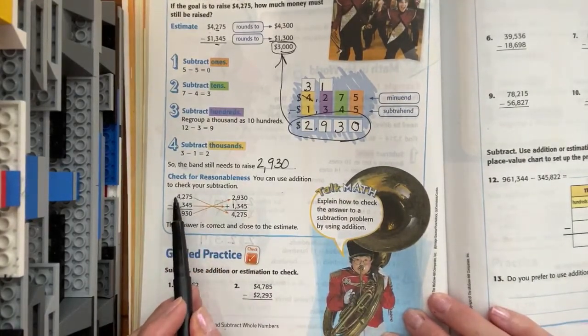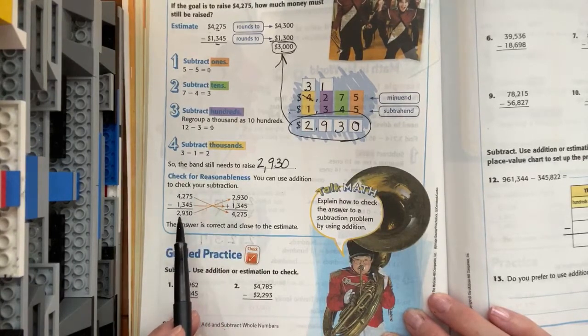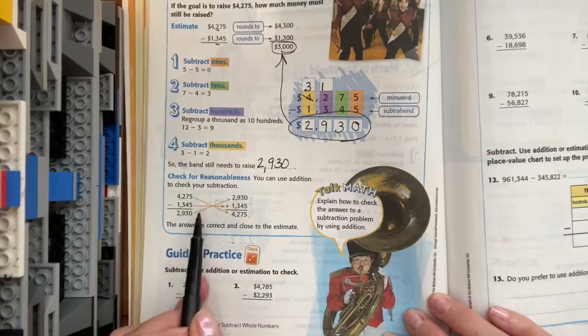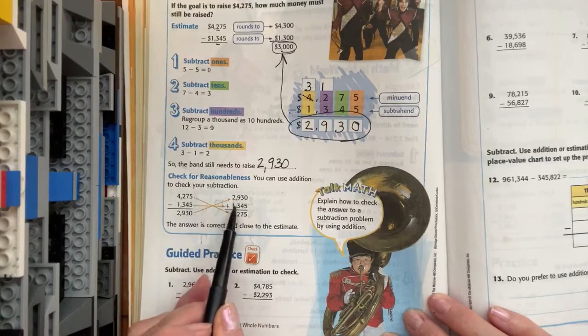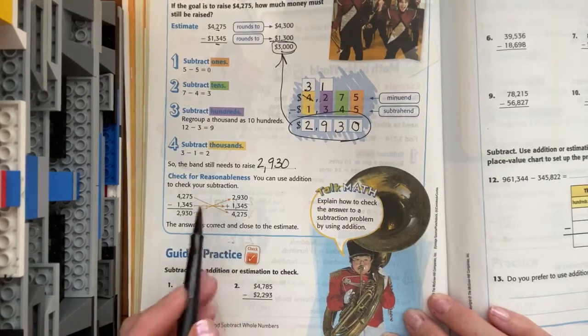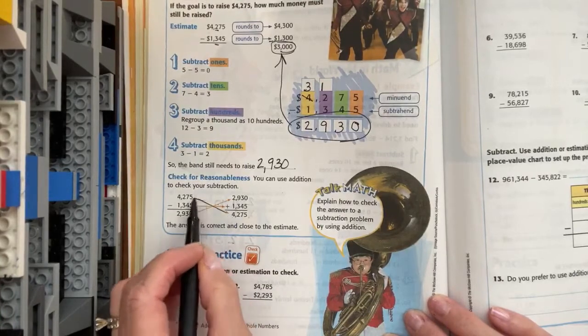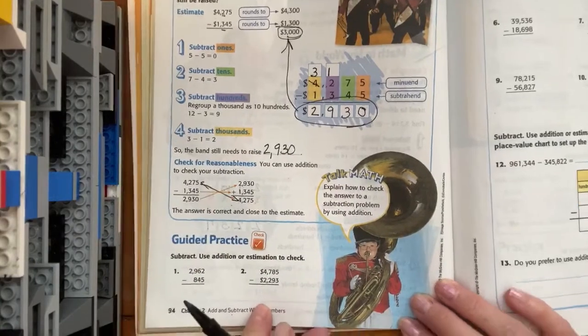So here, that's what they're showing you. They had four thousand two hundred and seventy five. They subtracted. We got two thousand nine hundred and thirty. So then they rewrote it as an addition problem. Two thousand nine hundred and thirty plus that middle number equaled the top number. So you can see right here that those guys are the same. That tells you that your answer is correct.